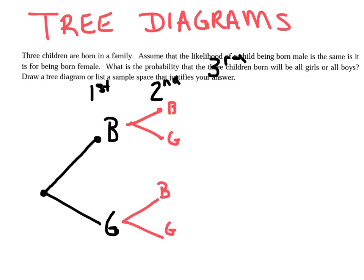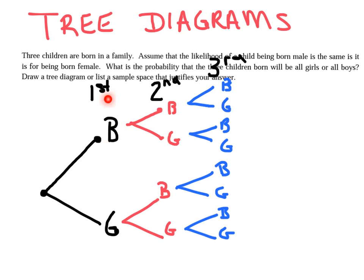And off each one of these options, you could have a boy or a girl. So now your tree diagram is complete. And again, these right here represented first child, second child, third child.